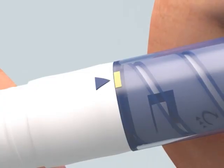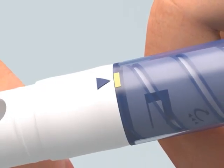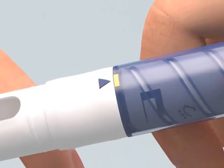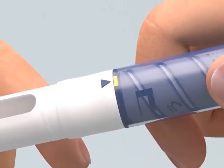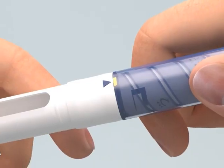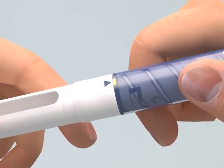Check that the cartridge holder is attached to the pen body with the blue arrow lined up with the yellow or white mark on the pen body before each injection. After the attachment of the pen needle, a few drops of medication may be observed.